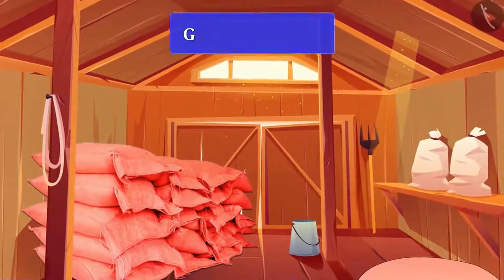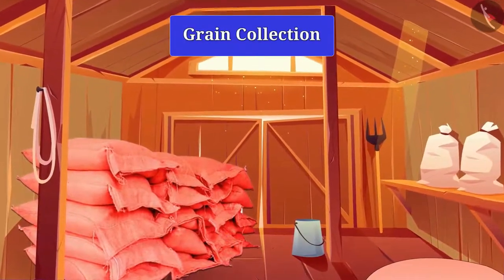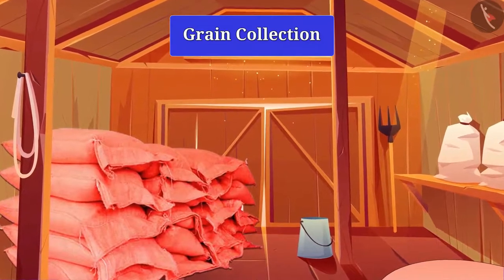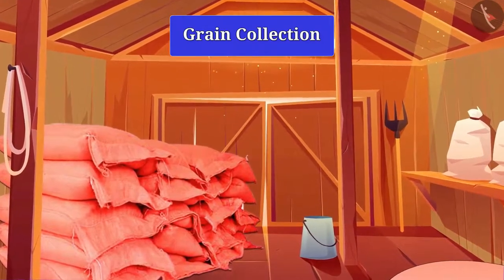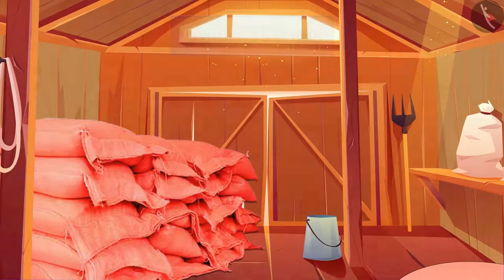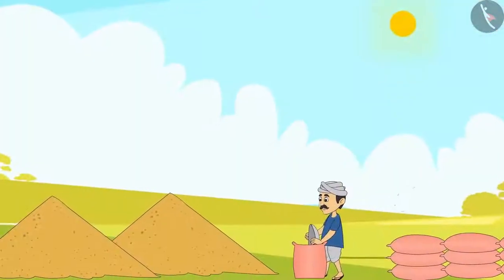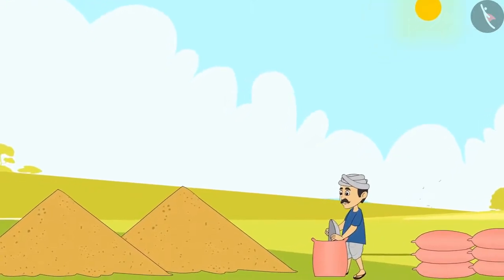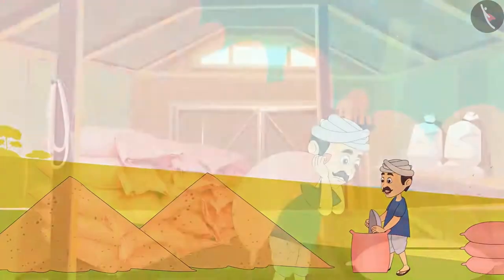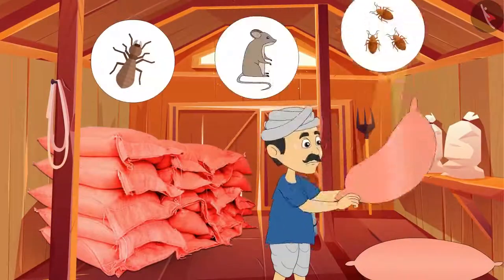If the crop is not stored properly after harvesting, it also destroys the crop. Therefore, grains should be stored properly. Do you know how to store grains? The grains can be stored by spraying chemicals and drying them in sunlight before storing, which keeps away all insects, mice, and microorganisms.